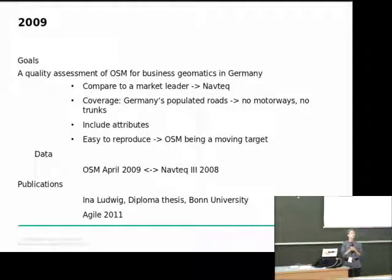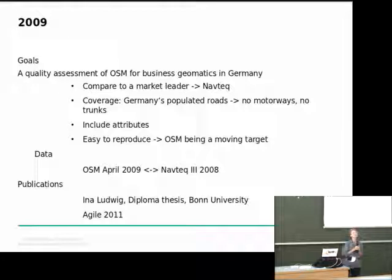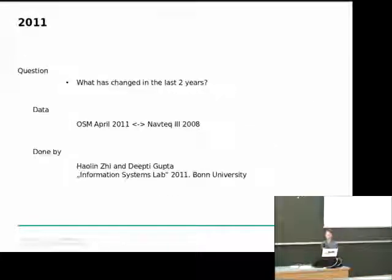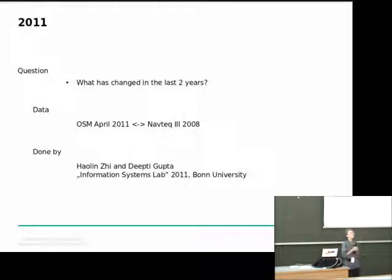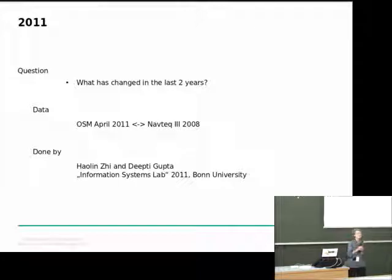I will show you now the changes in the last two years. The method is published in Ina's thesis and you can find a publication at Agile this year. The question I'm addressing today is: what has changed? We used new OpenStreetMap data but compared it with the old Navtec data. This was done in the course of an information systems lab at the University of Bonn, this time by Howlin Zee and Debti Gupta.